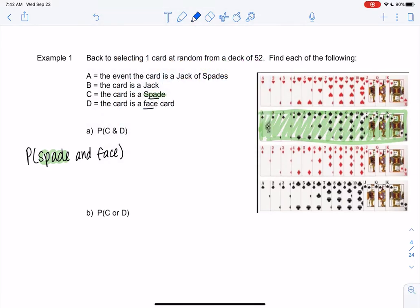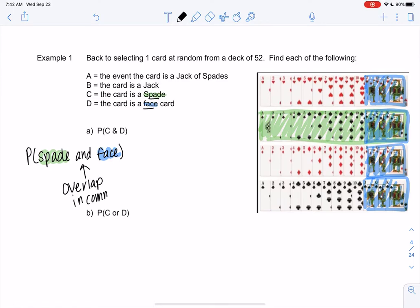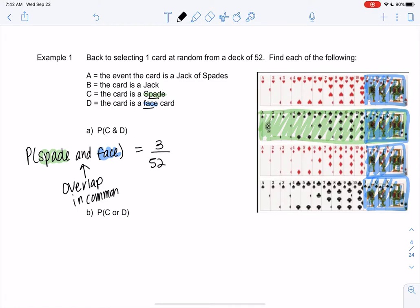And then a face card was anything with a face. So all of the Jacks, Queens, and Kings are face cards. And then we learned just now that and is the overlap. What do they have in common? So they only have these three in common. So it would be 3 out of the entire deck of 52. So 3 out of 52 gives me 0.0577.